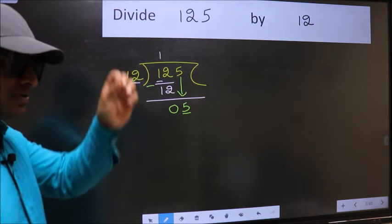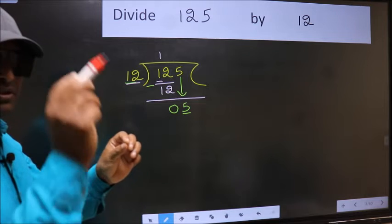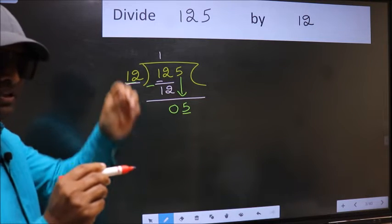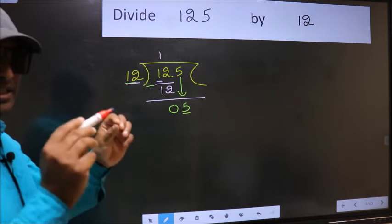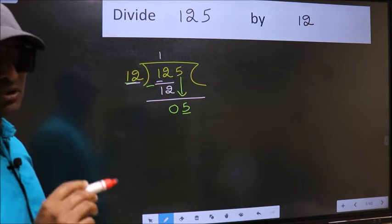I repeat: bringing the number down and also put dot take 0, both at the same step, you should not do.